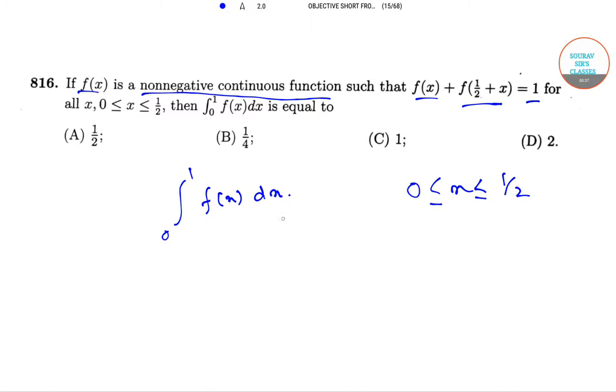This integration can be divided into two parts: 0 to 1/2 f(x) dx plus 1/2 to 1 f(x) dx. Let us denote the first part as I and the second part as J.